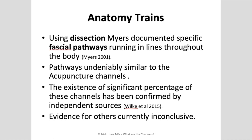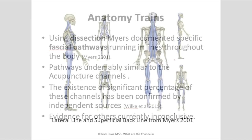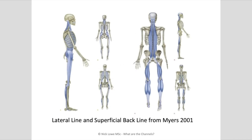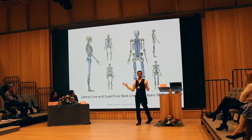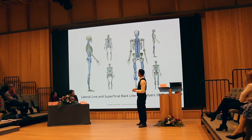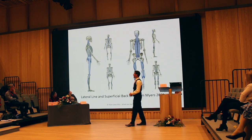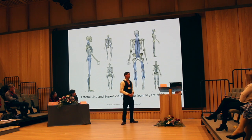About 50% of Myers' dissections have been confirmed, with confirmation of others still pending. Looking at these images — the lateral line corresponds to the gallbladder channel, and the superficial back line corresponds to the bladder channel. These are real, tangible structures that exist. This is not an abstract concept or an esoteric metaphysical line — this is real connective tissue that we're feeling or needling.